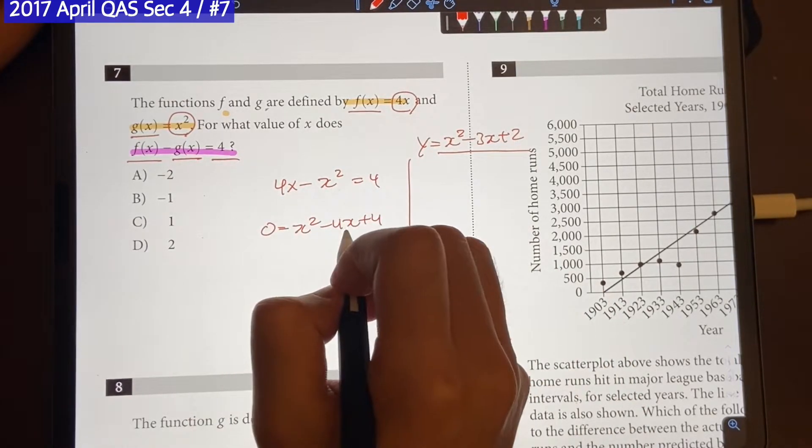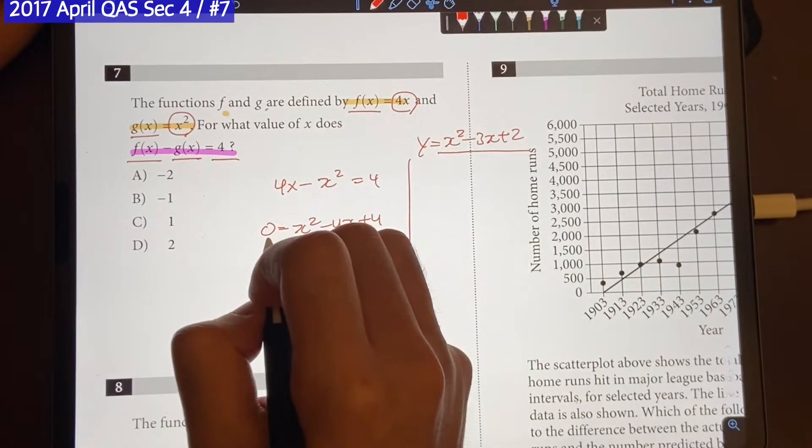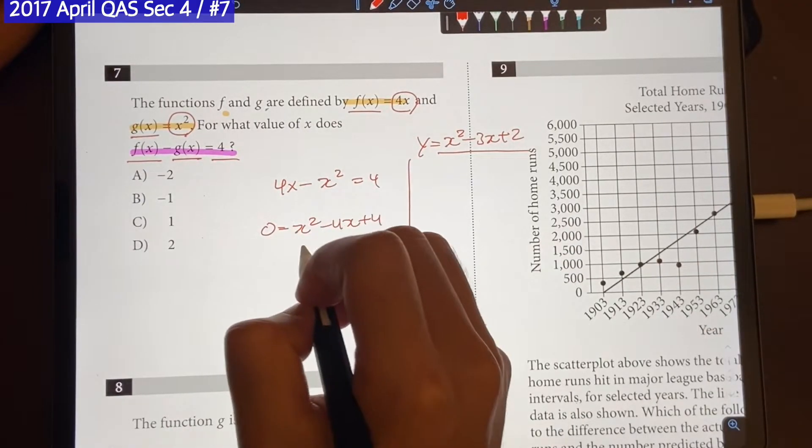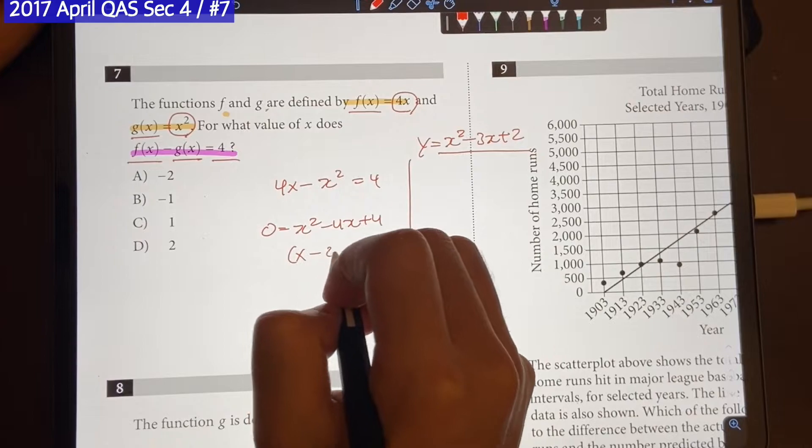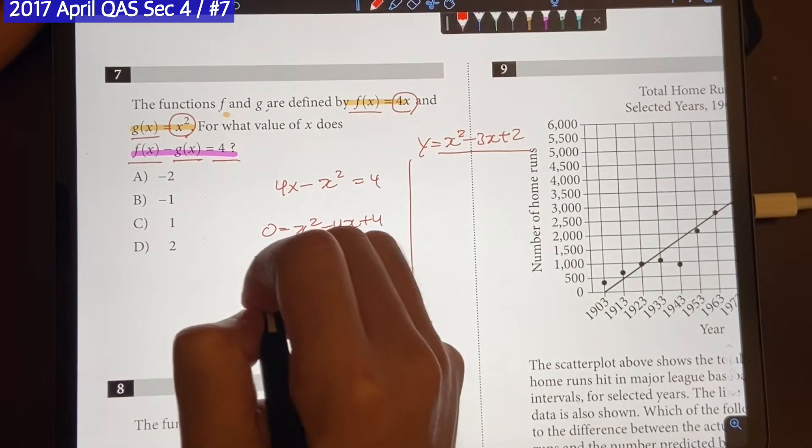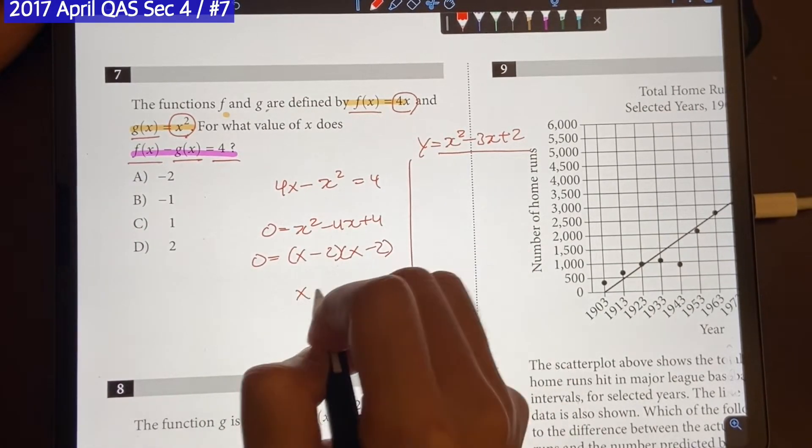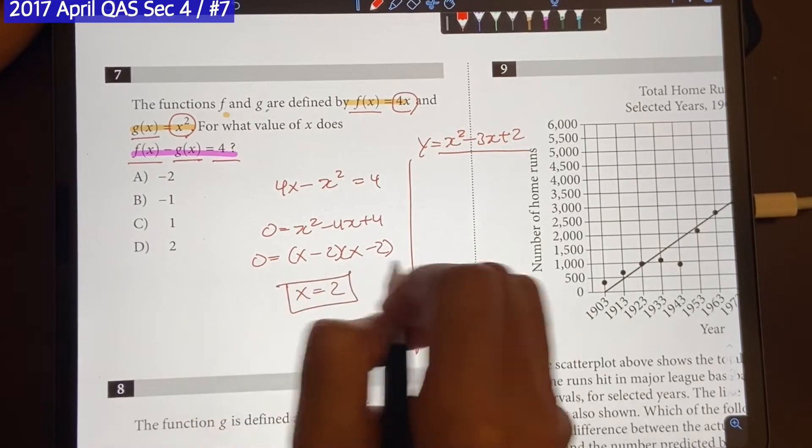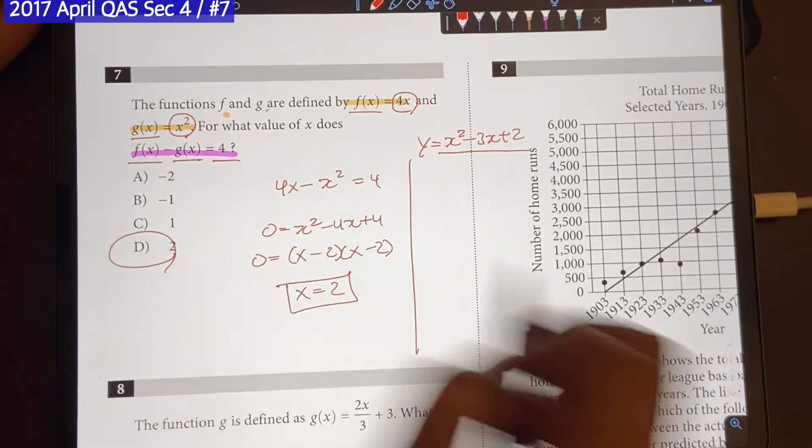And from here, what value of x makes the equation equal to 0? Well, we can find that by factoring x minus 2 and x minus 2 is equal to 0. And we know that x equal to 2 will make the equation equal to 0, which means the answer will be choice D.